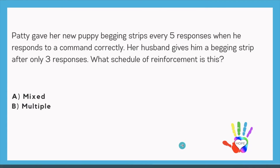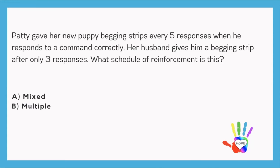I hope you guys are starting to see a pattern here. My goal is that you can just check this off the list and know for certain you're going to get this correct on your exam. Patty gave her new puppy begging strips every five responses when he responds to a command correctly, and her husband gives him a begging strip after only three responses. There's a clear SD — Patty signifies five responses required, and her husband signifies three responses. Each contingency is clear, so it's a multiple schedule of reinforcement.